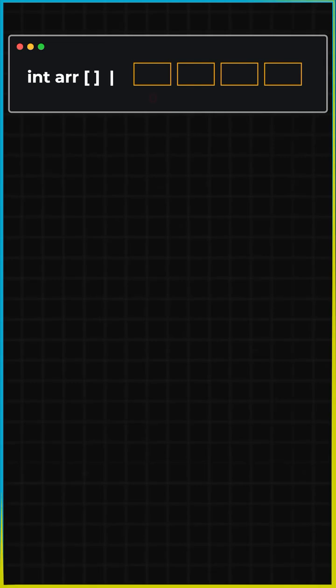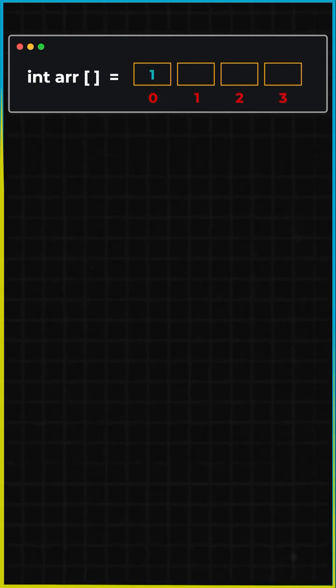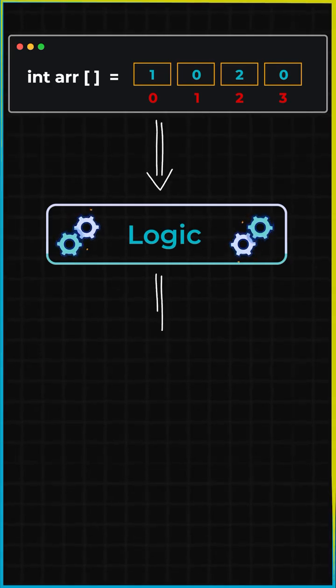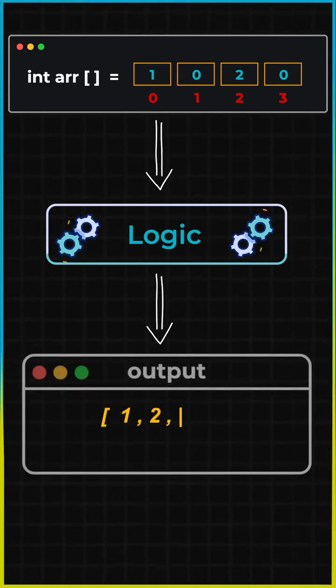Suppose I have an integer array with values 1, 0, 2, 0. We need to build the logic in such a way that the output of the program is 1, 2, 0, 0.